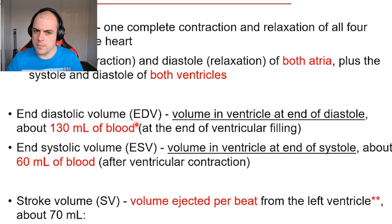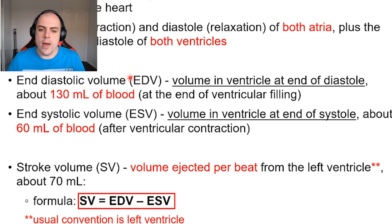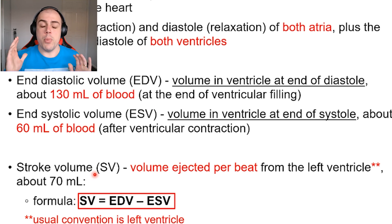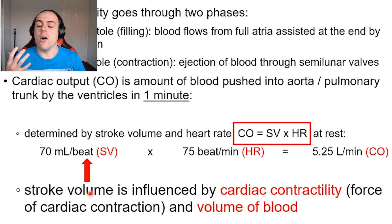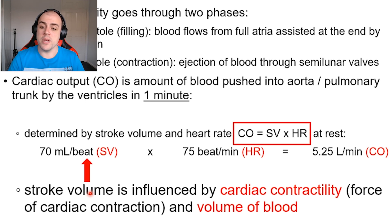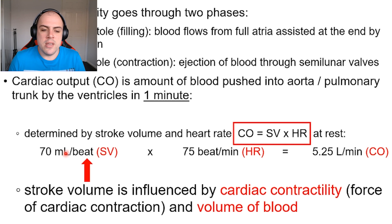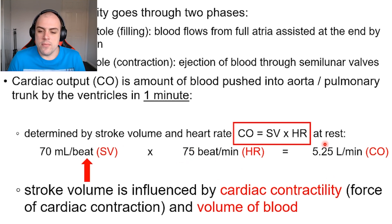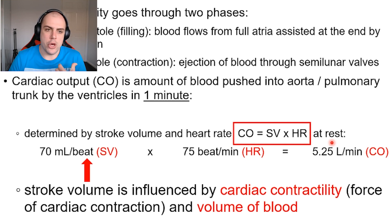To calculate cardiac output, we know that stroke volume is end diastolic volume minus end systolic volume, which tells us blood leaving the heart per beat. If we multiply stroke volume by heart rate, we get blood leaving the heart per minute. For example, with a stroke volume of 70 ml and a heart rate of 75 beats per minute, that gives us 5.25 liters of blood pushed out of the heart per minute.